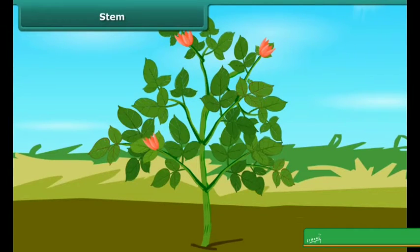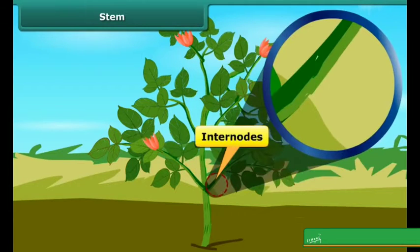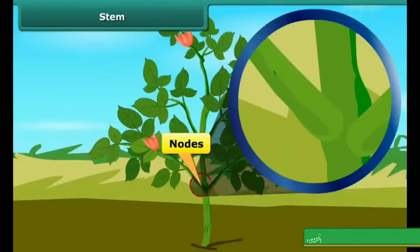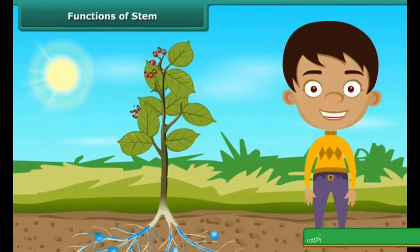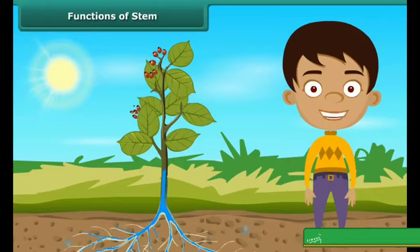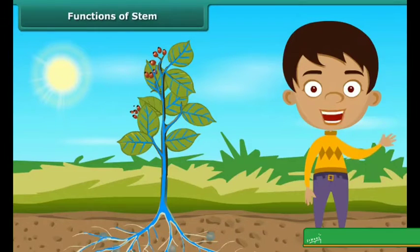The stem has different parts: node and internode. Node is a point of attachment of a leaf or a twig on the stem — that means the point from where a branch, twig, or leaf can originate. The area between two nodes is known as the internode. Their functions include carrying water through the entire body of the plant, and they are also the growth zone of the plant.